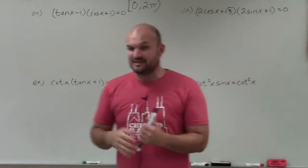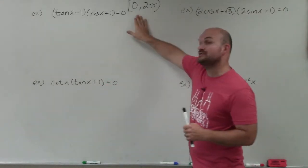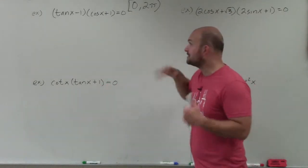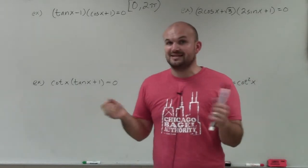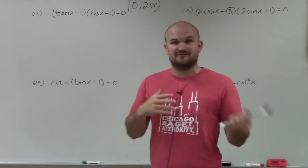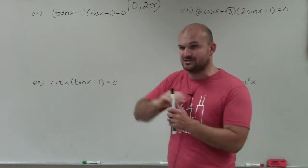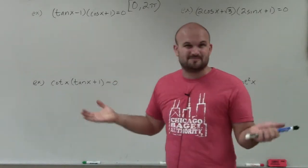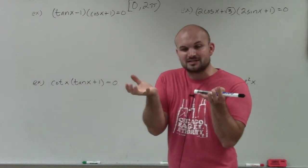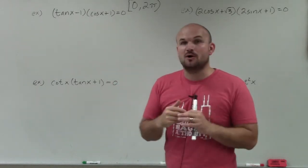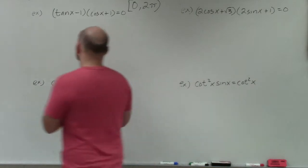So when solving this, we do have to find solutions between 0 and 2π. But as far as the solving part, we don't have to factor or multiply through — that's just going to expand it. We already have them as a product of two expressions equal to 0, so I'm just going to apply the zero product property.